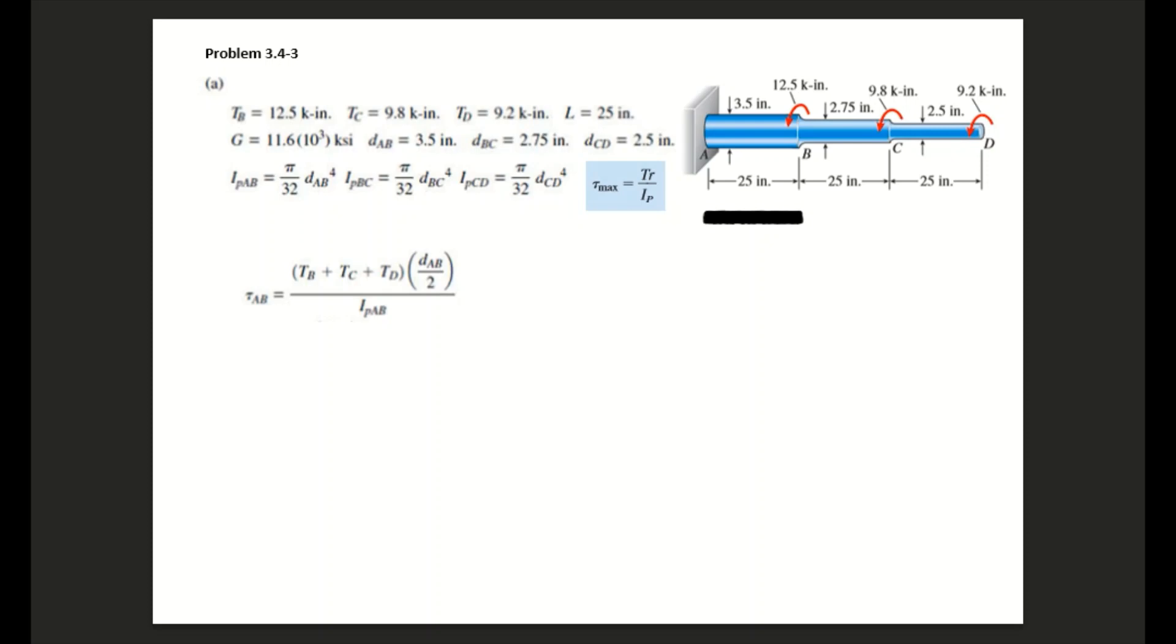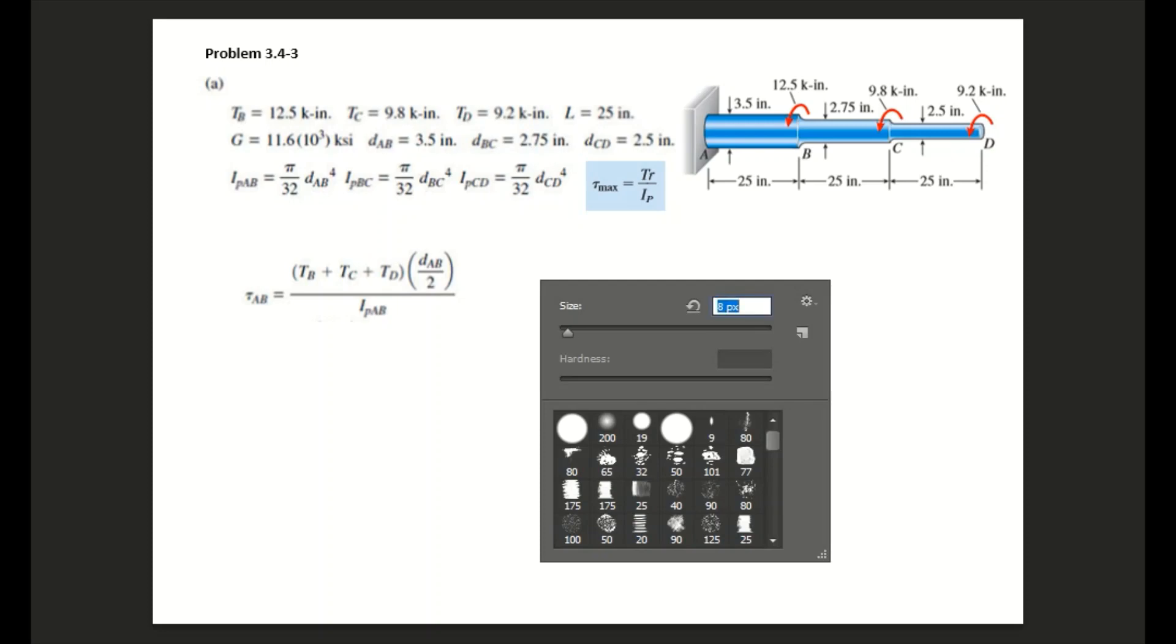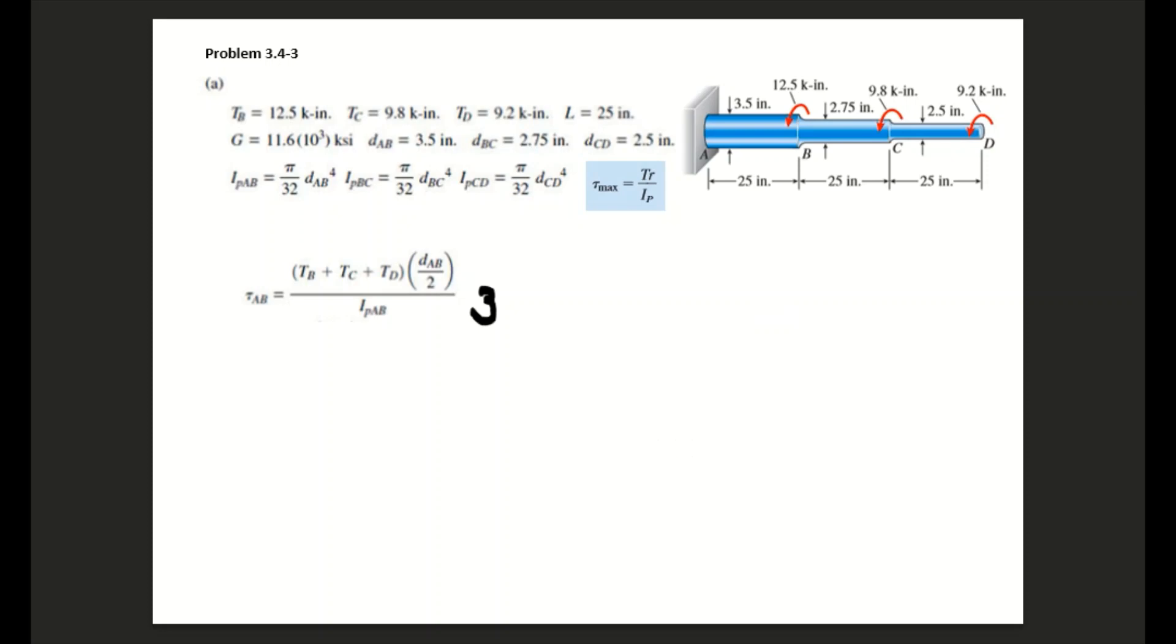We have the polar moment of inertia of AB, which is that equation right there. So when you solve for that, you will get 3,742 psi.